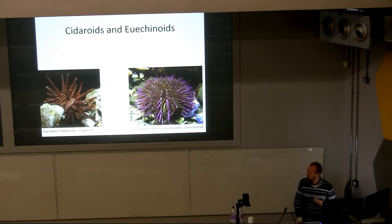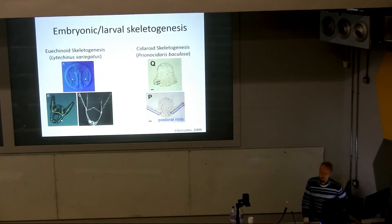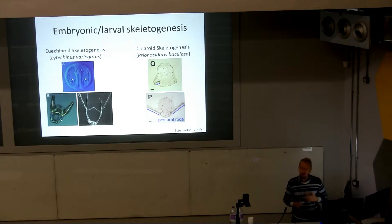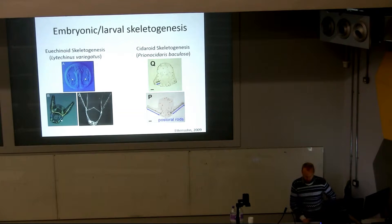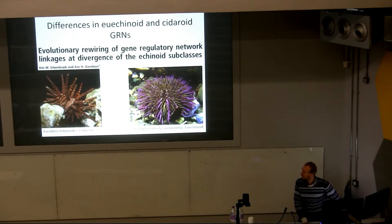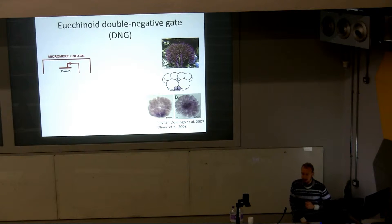Here is a cidaroid and a euechinoid. Strongylocentrotus purpuratus is what we have our very well-understood gene regulatory network for. And this is Eucidaris tribuloides, a cidaroid echinoid and a new developing model organism. Both form a larval or embryonic skeleton—larval in cidaroids, embryonic in euechinoids—these high-magnesium calcium carbonate skeletons. What I'm going to be talking about is the gene regulatory networks underlying skeleton formation and how that's different in these two taxa.